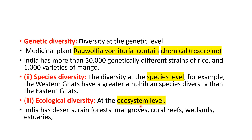In India, ecological diversity includes desert, rainforest, mangroves, coral reefs, wetlands, and estuaries. That is a model of biodiversity at the ecosystem level.